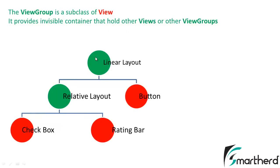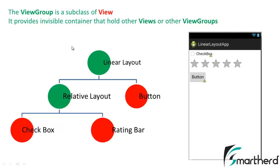Let me show you a hierarchical graph that depicts what views and view groups are. The green bubble represents the ViewGroup and the red bubble represents the View. First is the LinearLayout, which contains the ViewGroup RelativeLayout and also a View such as Button. Inside the RelativeLayout ViewGroup, we have two views: Checkbox and RatingBar.